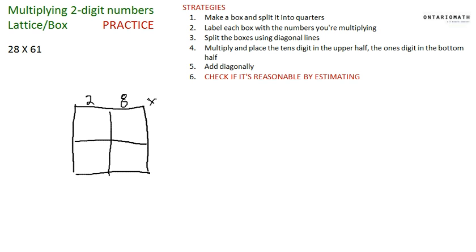28 multiplied by 61. You don't have to do that but I like having that there. Next thing I'm going to do is divide my boxes diagonally like this. I go through the line through the corners there, and then I actually just start multiplying.